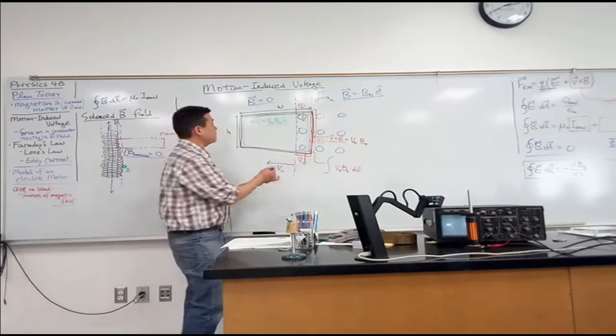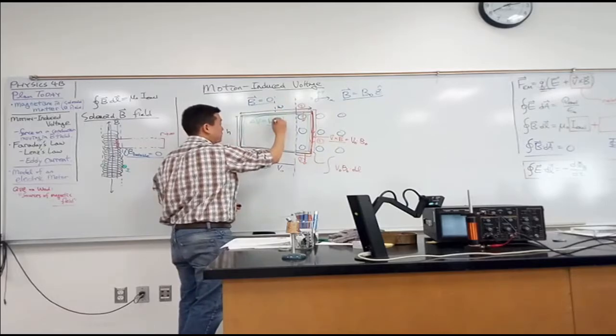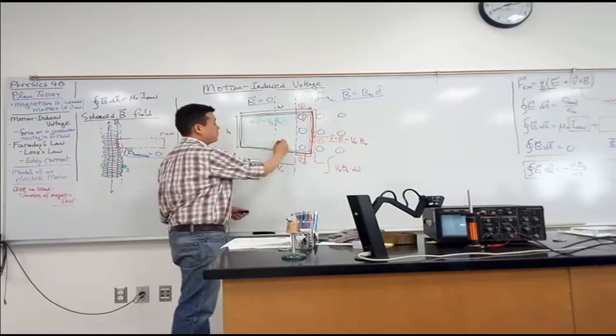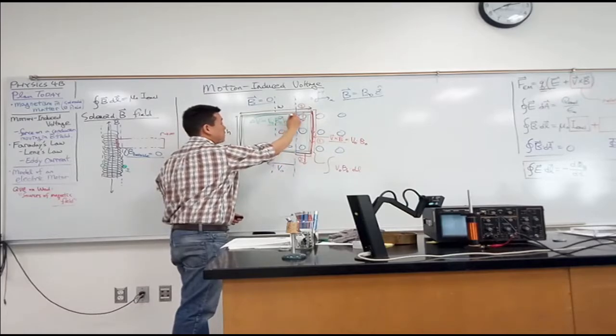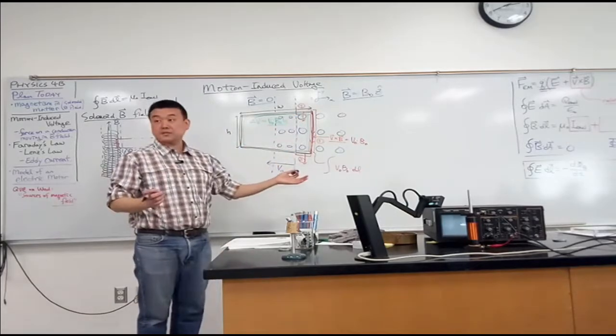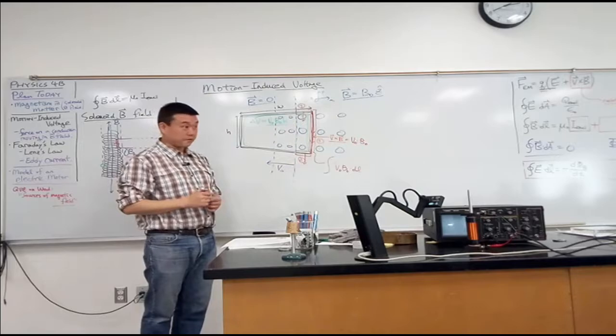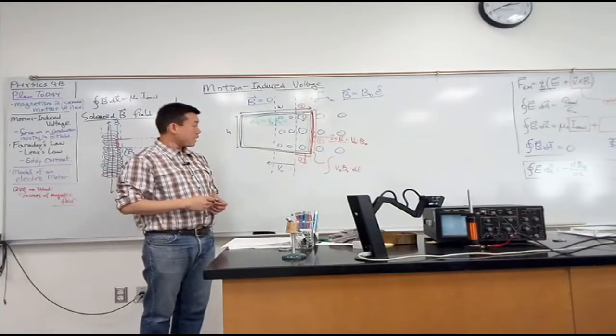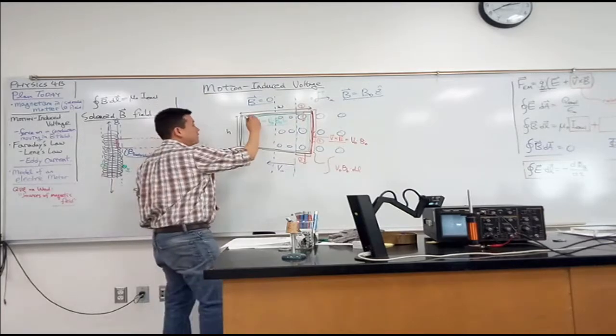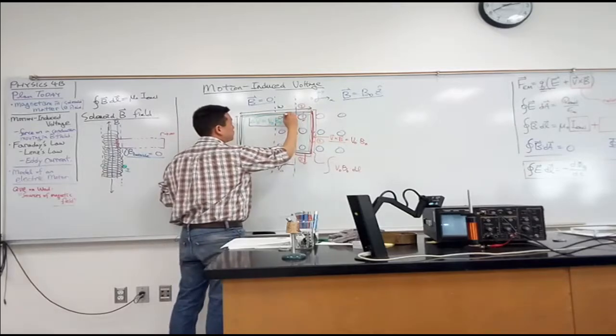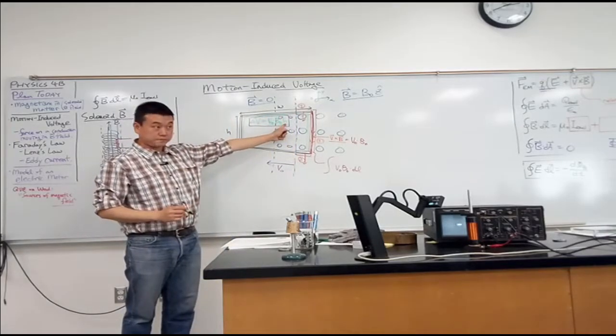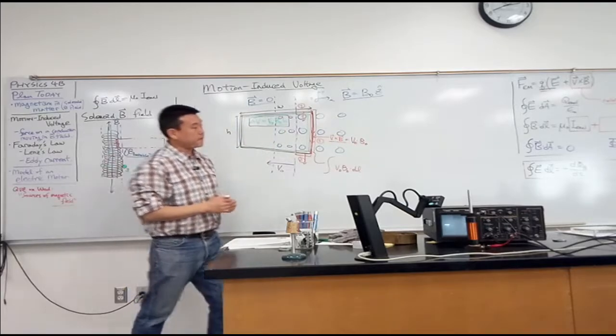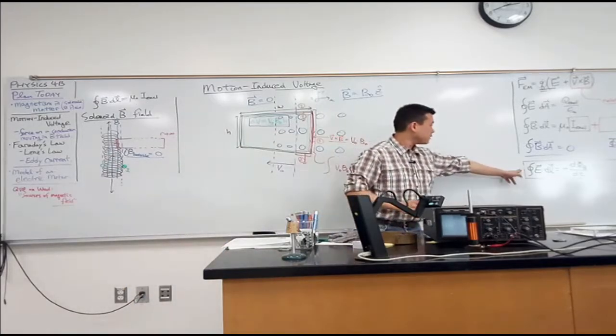The amount of region of space that's filled with the magnetic field is changing. A moment later, this boundary would move up here and there will be additional region of magnetic field. But the velocity of physical object is zero. So I want to get this result, that the induced voltage inside the loop is still V_naught B_naught H. Let's see if Faraday's law gives us that.